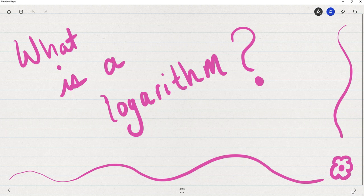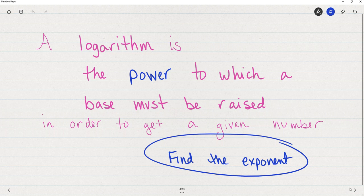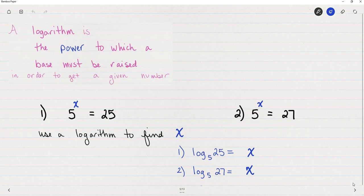Let's look at what a logarithm is. It sounds like something so foreign and complicated, but really it could be quite simple if you understand that it's simply this new operation that finds the power, that finds the exponent. A logarithm is the power to which we raise a base in order to get a given number. Finding a log means finding the exponent or finding the power.